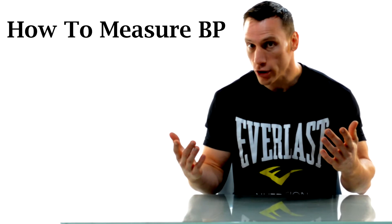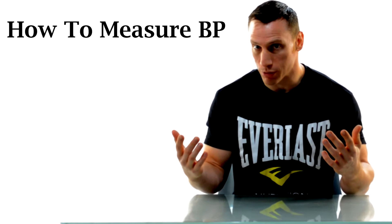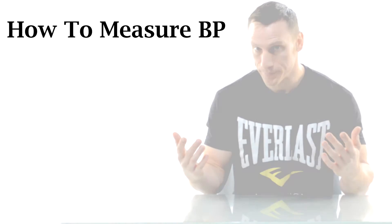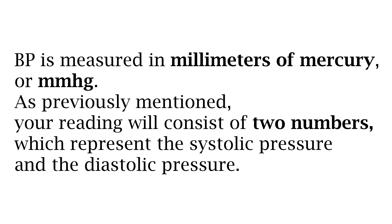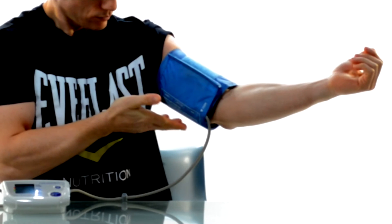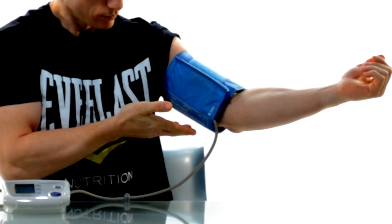Now let's take a look at how to measure your blood pressure. Your blood pressure is measured in millimeters of mercury, or mmHg. As previously mentioned, your reading is going to consist of two numbers representing the systolic pressure and the diastolic pressure.